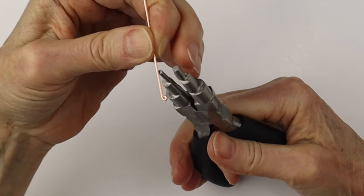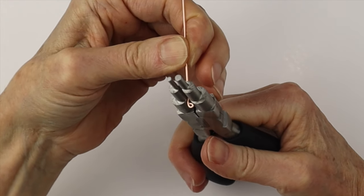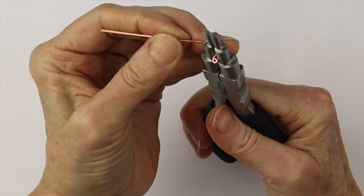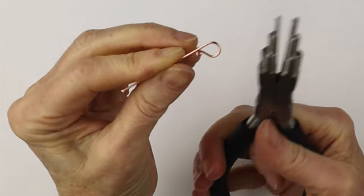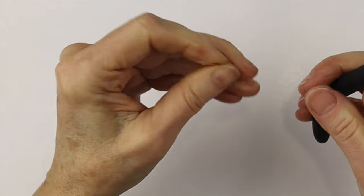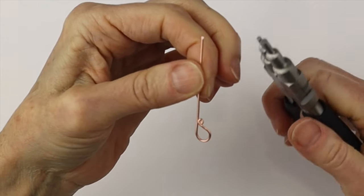I'm actually going to squeeze it to make it a little bit smaller. This is just to finish off the end. Then we'll get our looping pliers to make the hook part. We're just going to bring it around to form the hook.